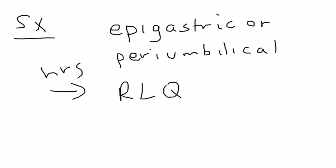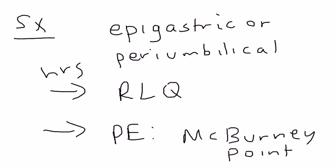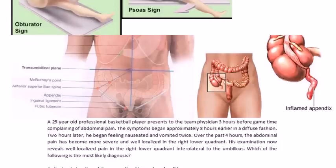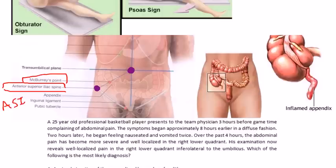And the pain on physical exam, the tenderness is elicited at McBurney's point. Now where is McBurney's point? This is the umbilicus right here. Right here is the anterior superior iliac spine. That's where that is pointing to. McBurney's point is right here as you can see. It's one third of the way from the ASIS, anterior superior iliac spine, to the umbilicus.